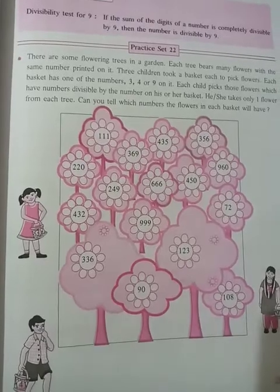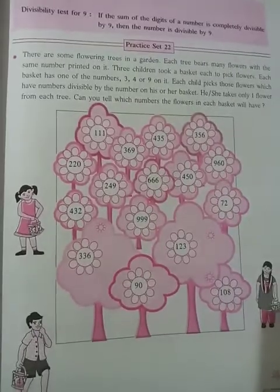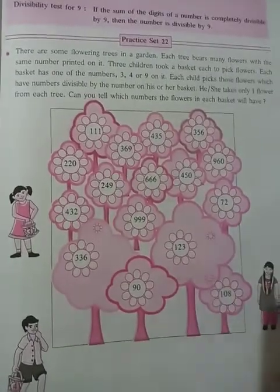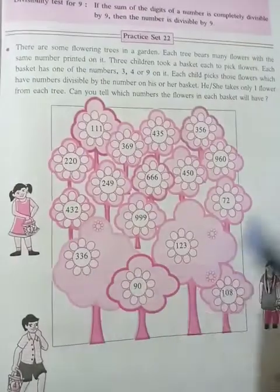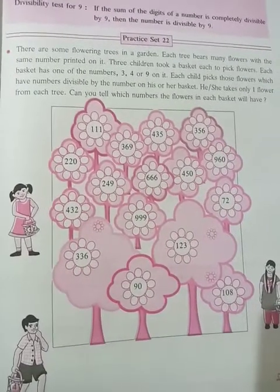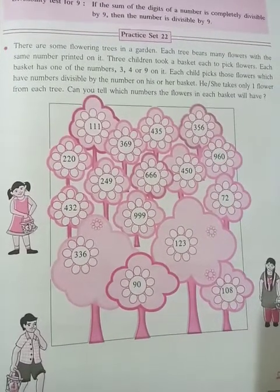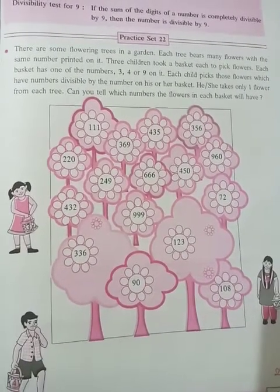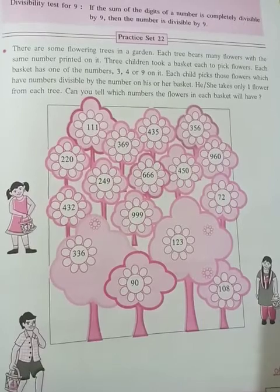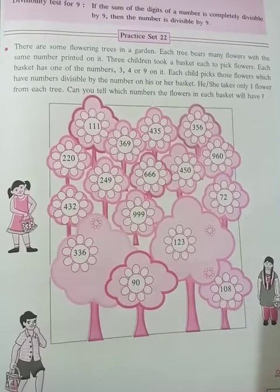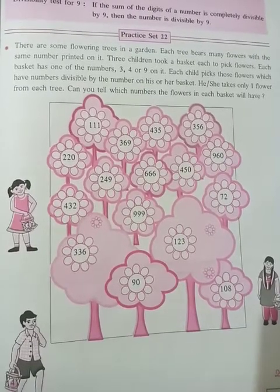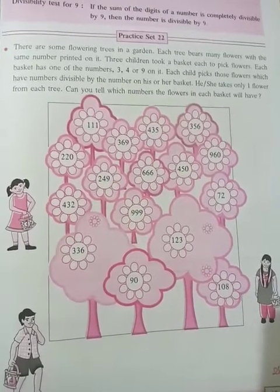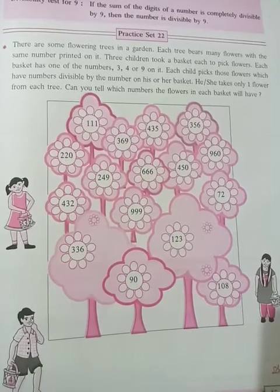Today, we will see Practice Set 22. There are some examples given. There are some flowering trees in a garden. Each tree bears many flowers with the same number printed on it.